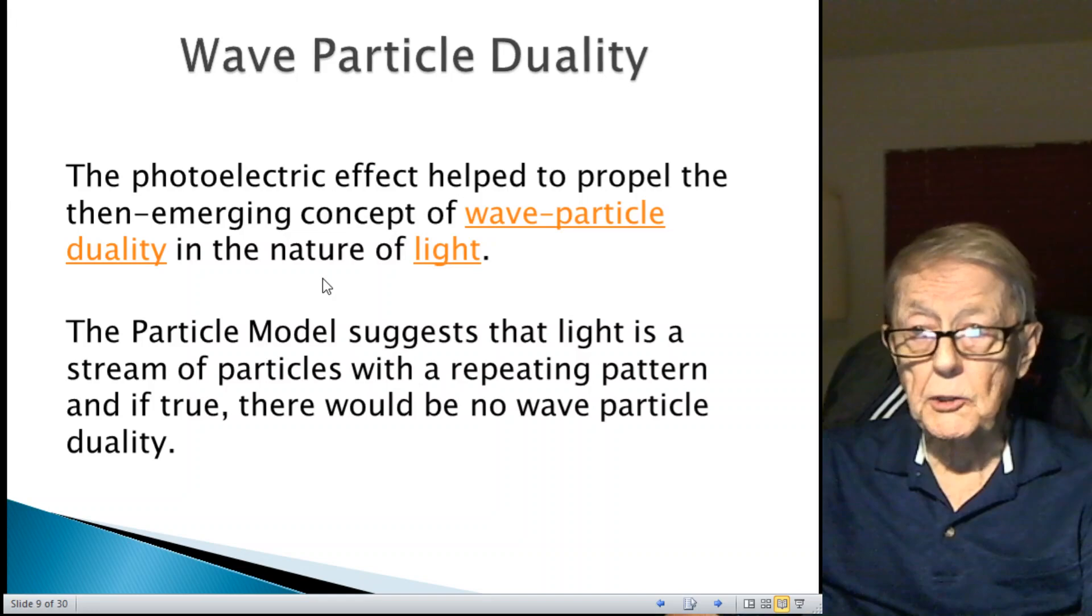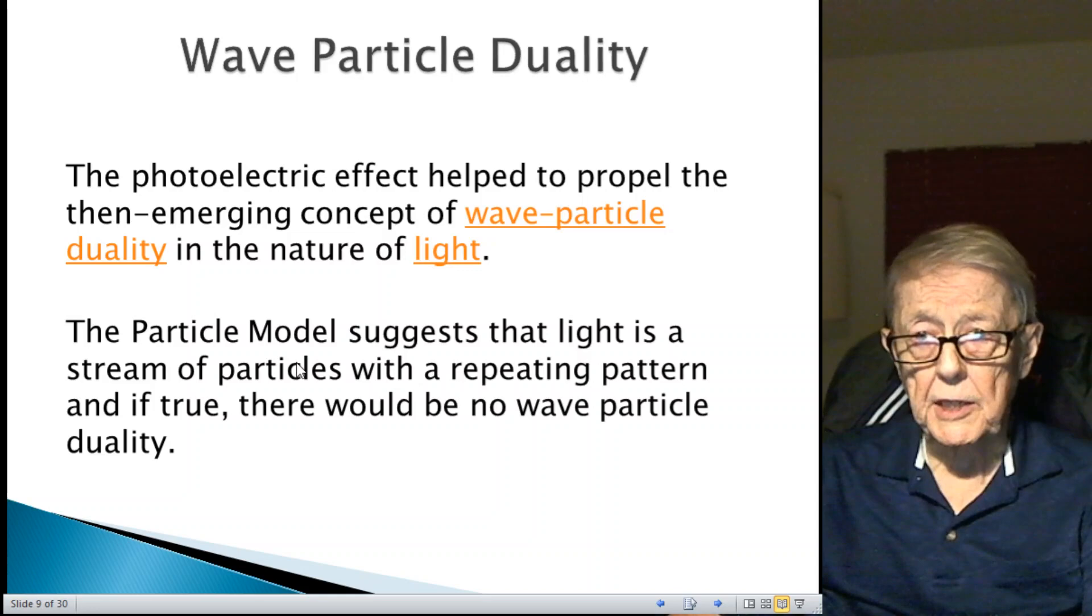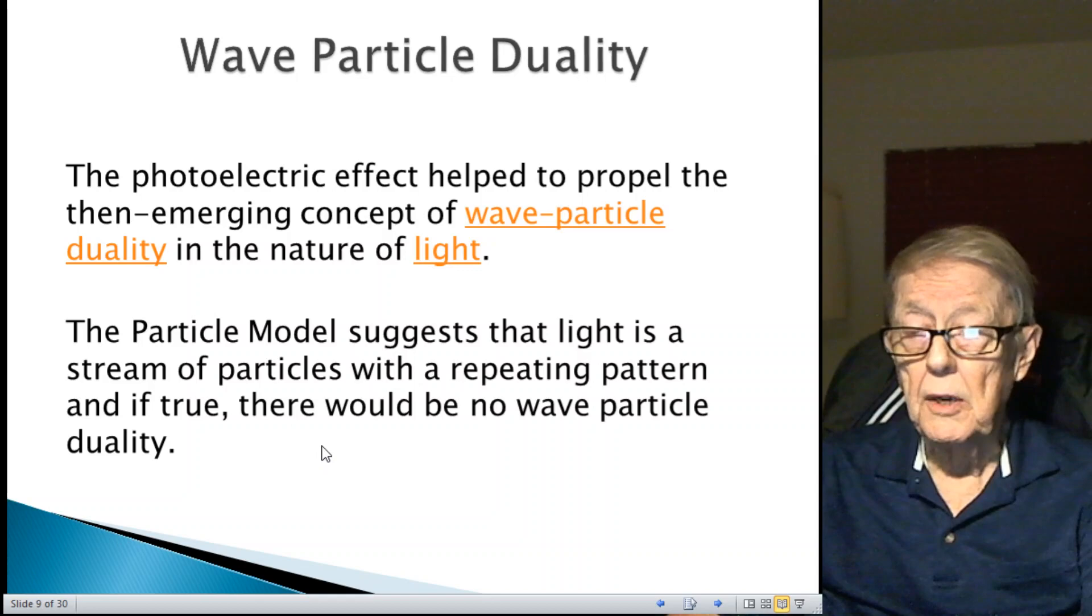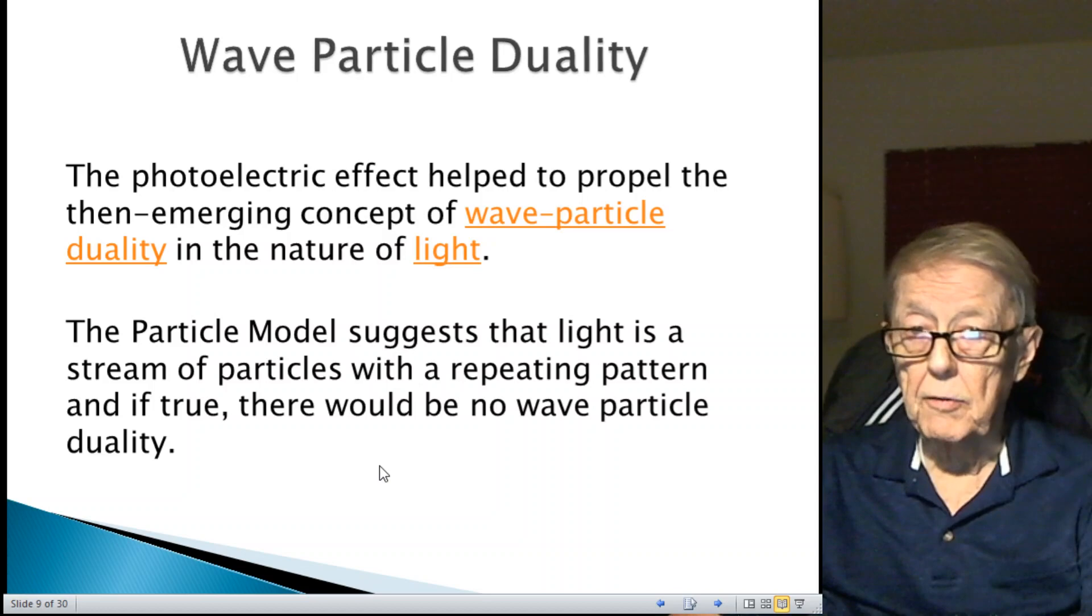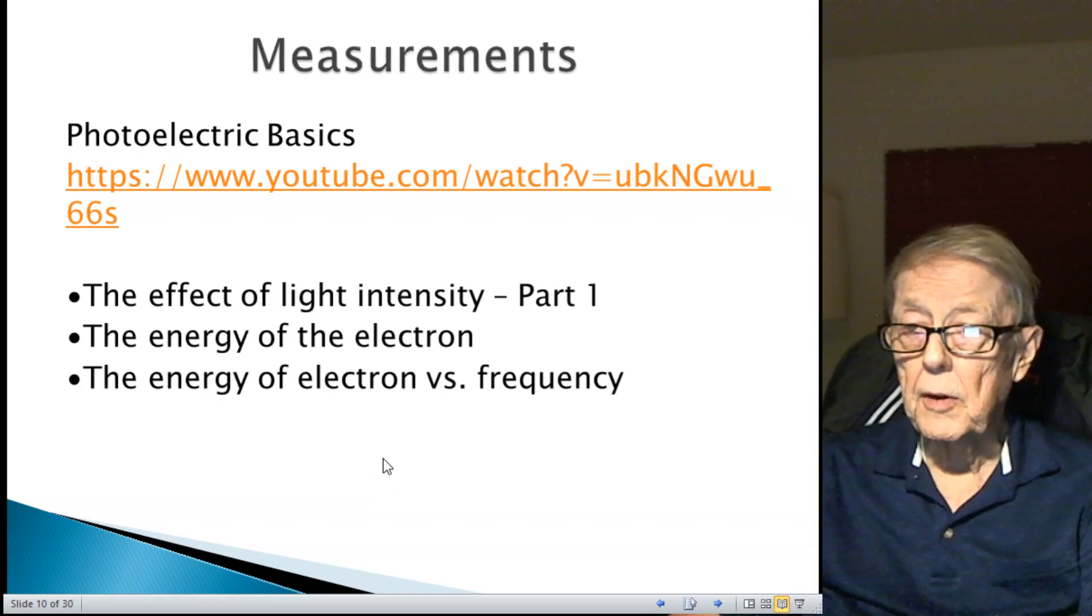Maxwell's theory of waves was very strong. This idea of a quanta of energy hitting the atom and releasing an electron made it look more like a particle. So you end up with wave-particle duality. It started right there. And of course, the double slit experiment just emphasized the point. The particle model suggests that light is a stream of particles with a repeating pattern. And if true, there is no wave-particle duality with this model, because there's only particles. The wave comes about by a distribution of particles in a repeating pattern.